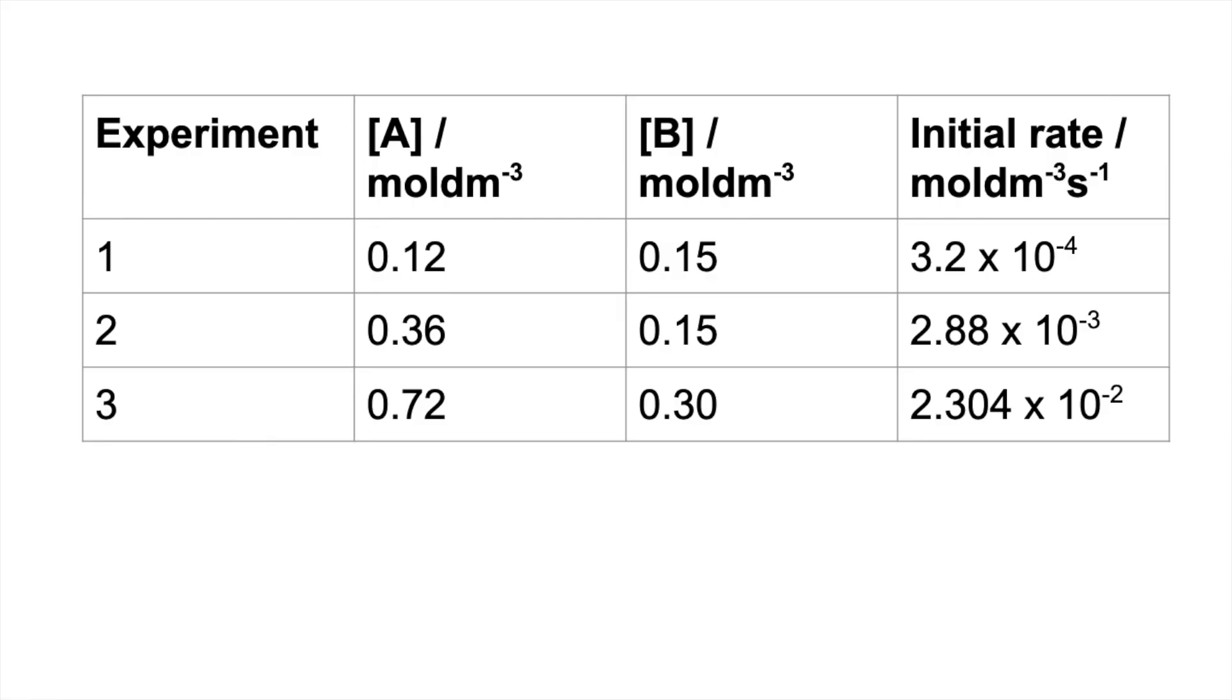So here's the table in question. You can see substance A—it's going to be fairly straightforward to work out its order because we can hold B constant. However, to work out B's order, we need to try and hold A constant, and you can see we can't do that. So that makes this one slightly more tricky.